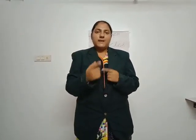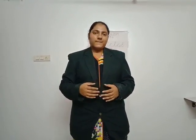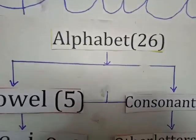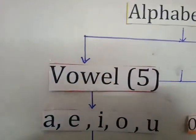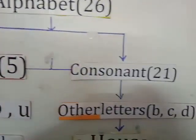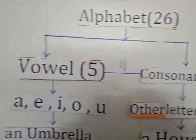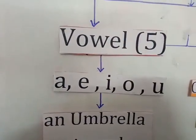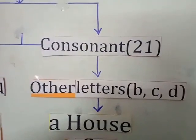Again we'll revise the exercise on articles. In our English alphabet there are 26 letters divided into two parts: five are vowels — A, E, I, O, U — and the remaining 21 are consonants, such as B, C, D, etc.